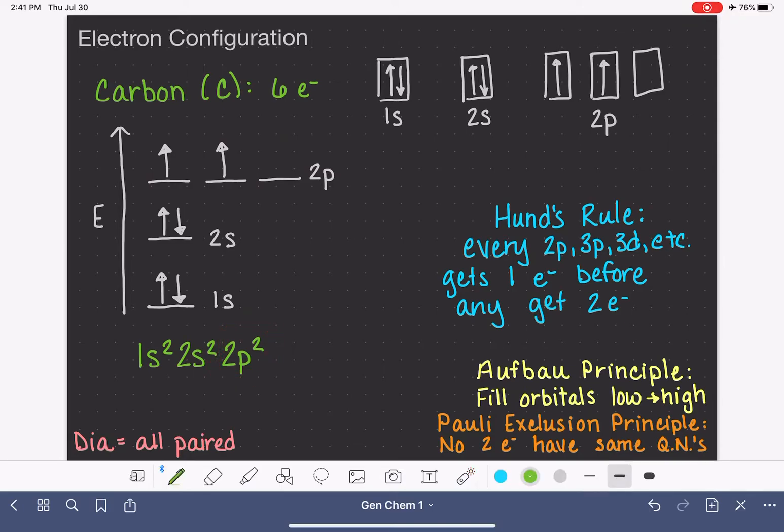Sometimes some people might want to distinguish them, like say 2px there's 1, 2py there's 1, 2pz in this case there aren't any. But that's typically not necessary. It's typically sufficient to just lump all of the 2p orbitals together. So here is our electron configuration.